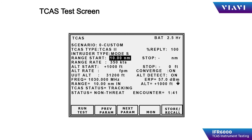The TCAS operation screen is where the operator can configure the physical parameters of the simulated target, such as start distance, altitude, altitude rate, and velocity. It also provides basic measurements of the TCAS being tested, such as frequency, power level, and whether the target is being tracked.